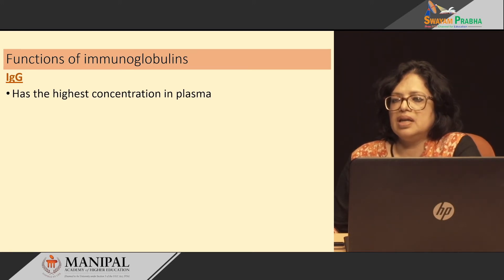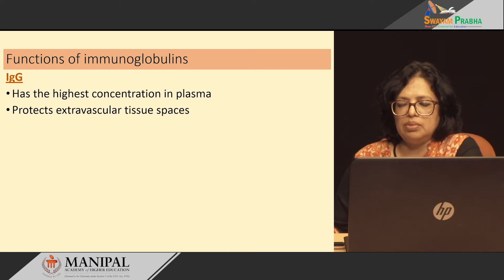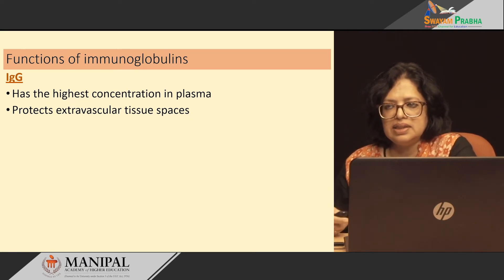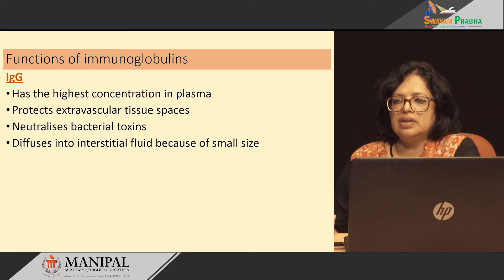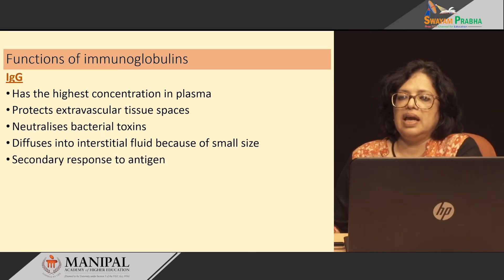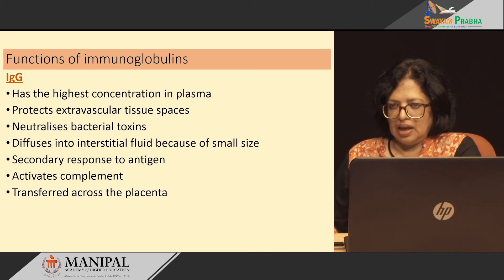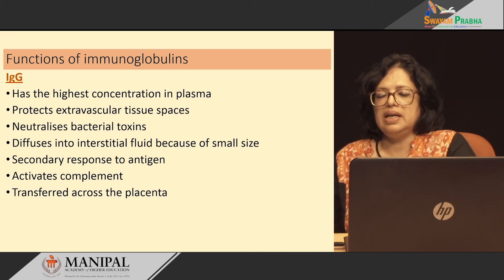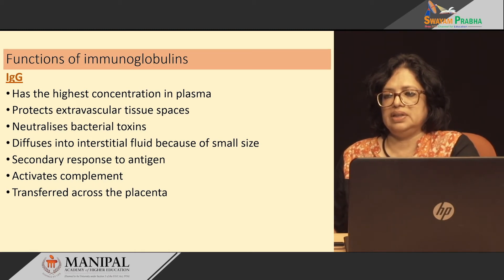IgG is present at the highest concentration in plasma. It protects the extra-vascular tissue spaces and can move from the blood into the interstitial space to neutralize bacterial toxins. It diffuses into the interstitial space because of its small size. It mediates the secondary response to antigen, can activate the complement system, and is the only immunoglobulin which can be transferred across the placenta from mother to fetus.